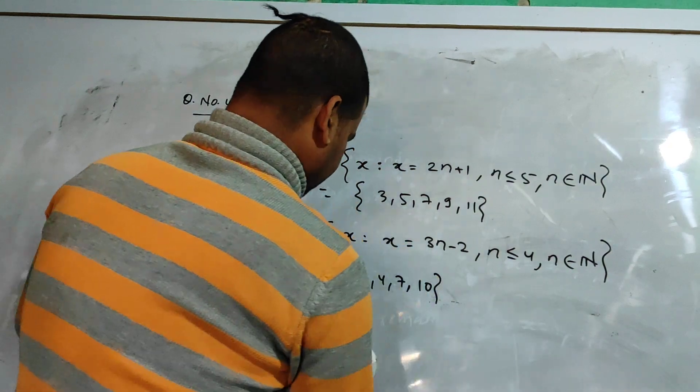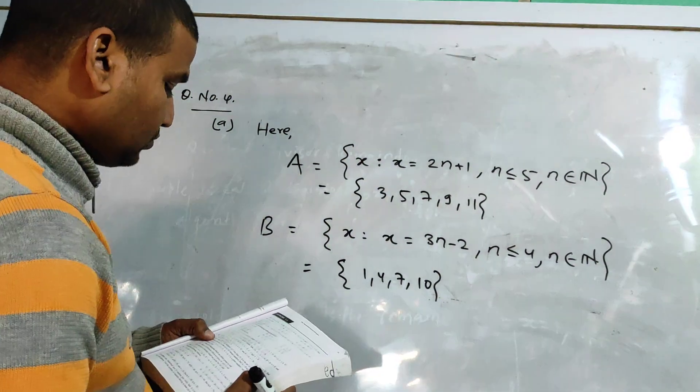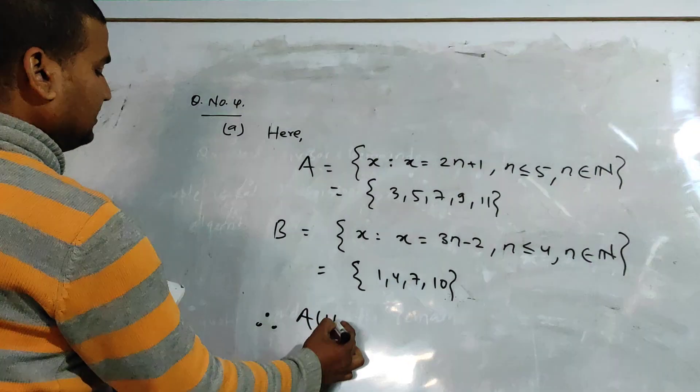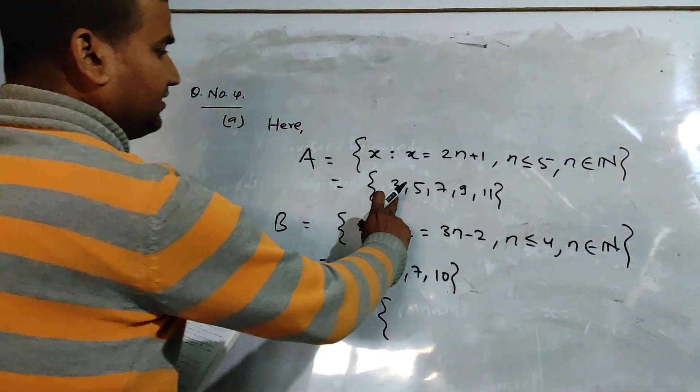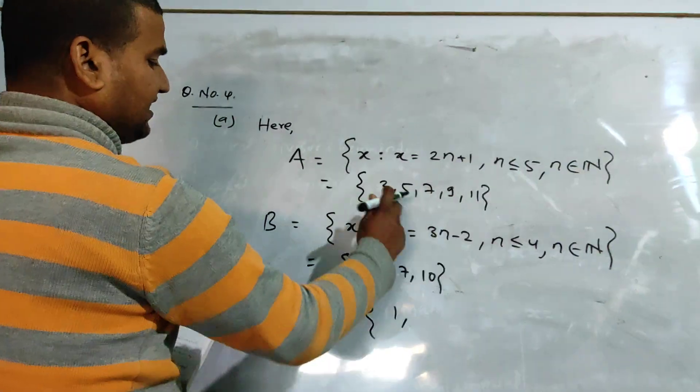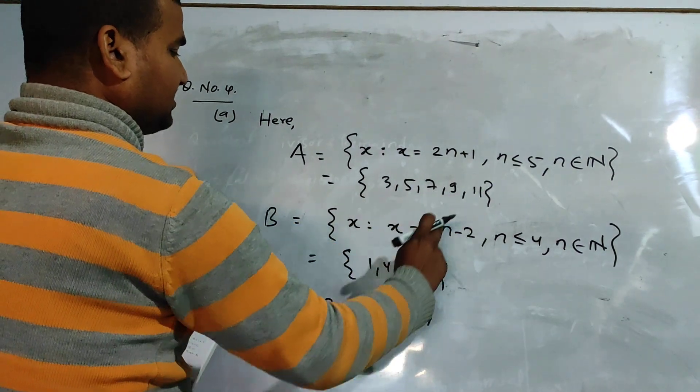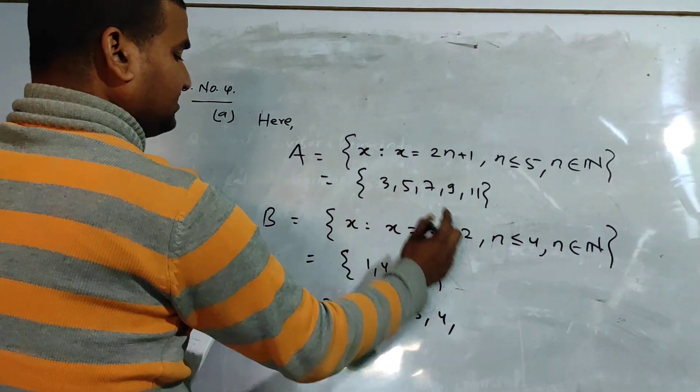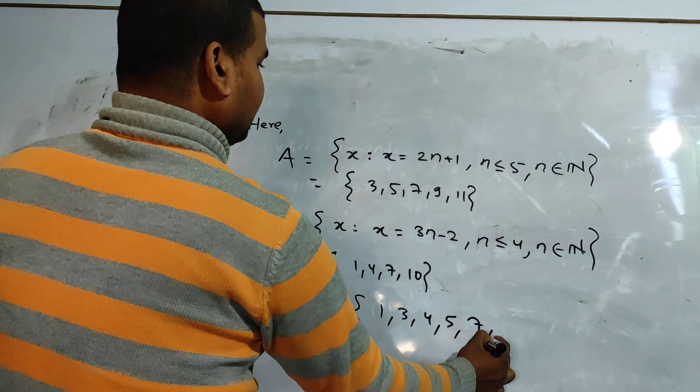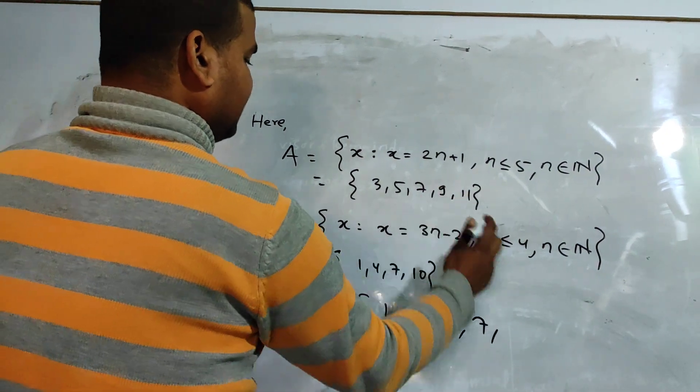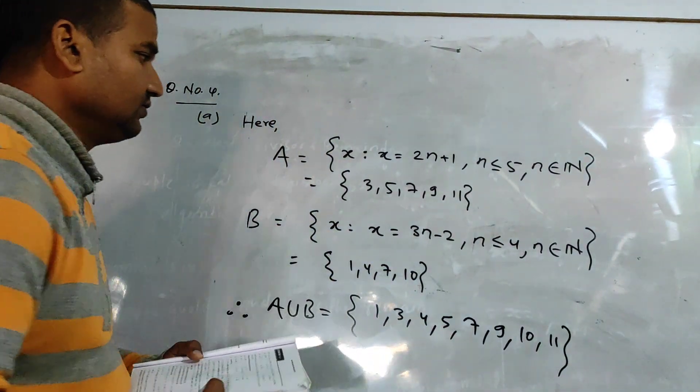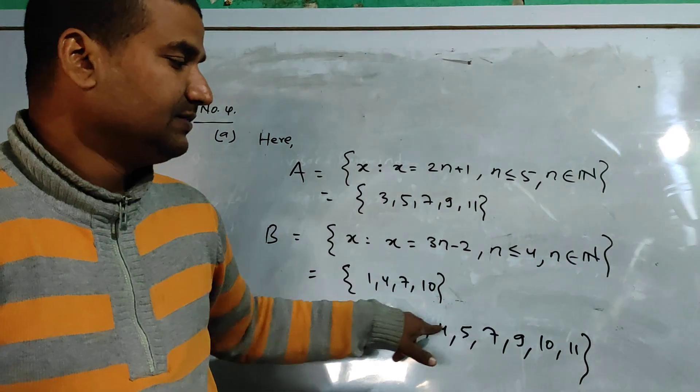Now the question is A union B. Therefore A union B, we have all elements from both sets. We have 1, 3, 4, 5, 7, 9, 10, 11. We can write all elements in this way. We can find ourselves the union of the sets.